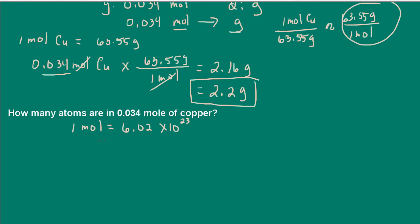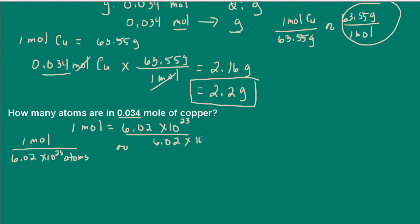This is the same concept with the mole. One mole of anything is equal to 6.02 times 10 to the 23. We're being asked how many atoms are in this sample of copper. So I can make conversion factors: one mole of copper is going to have 6.02 times 10 to the 23 atoms, or written as 6.02 times 10 to the 23 atoms per mole.